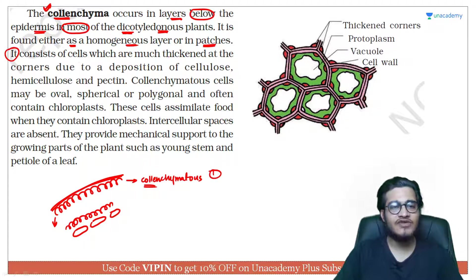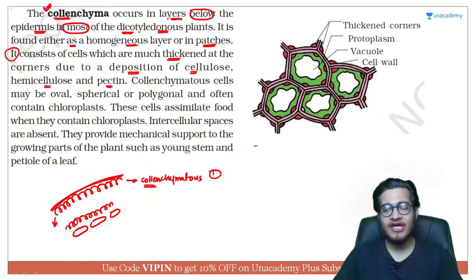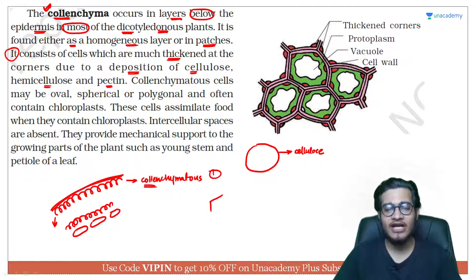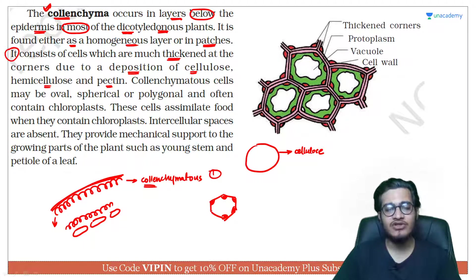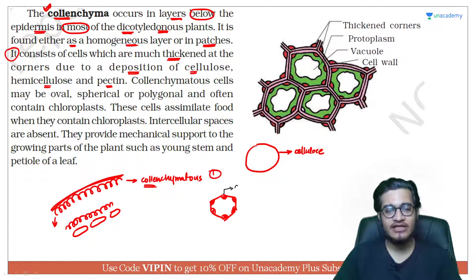It consists of cells which are much thickened at the corners due to deposition of cellulose, hemicellulose, and pectin. If I draw a parenchyma cell, its cell wall made of cellulose was quite thin. But in a colenchyma cell, the corners are thick — because on those corners there is deposition of cellulose, along with hemicellulose and pectin, which makes those corners rigid.